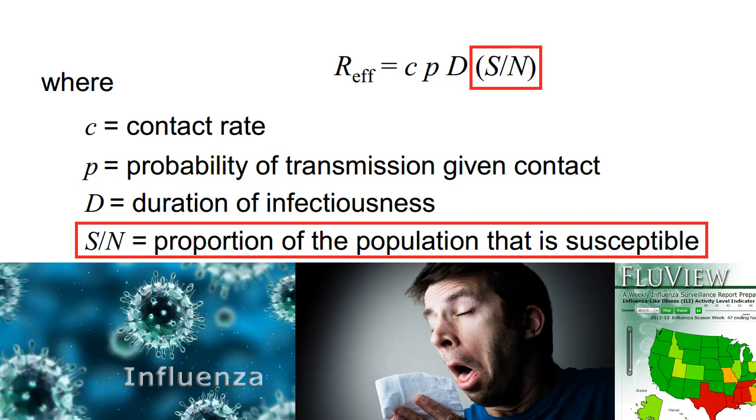There's a second number called the effective reproductive rate. It's the product of the basic reproductive rate and the proportion of the population that are susceptible to the disease, abbreviated S/N.